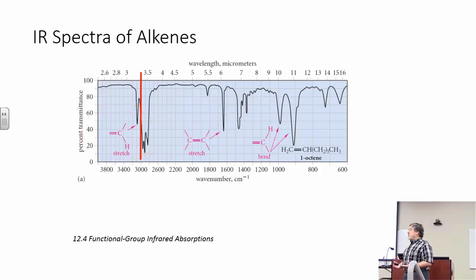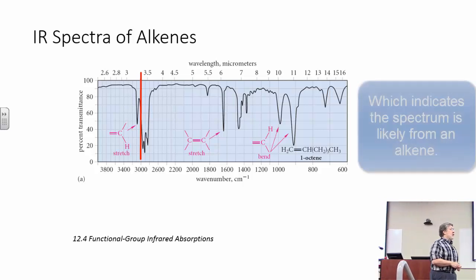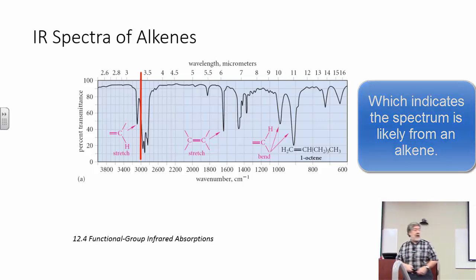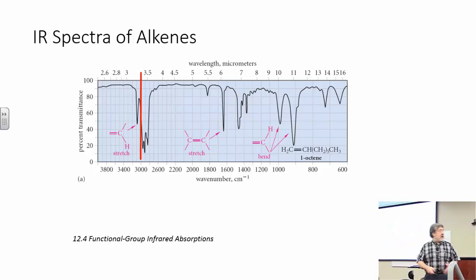And so when you see a spectrum for the first time, you look at the 3000 line, and you notice, yeah, there's stuff to the right, but notice in particular stuff just to the left of 3000. That indicates hydrogens attached to SP2 hybrid carbons. And again, this is first pass. Now there is other information here. This other information I'd say probably is your second pass information, because maybe noting this is all you need to solve the question at hand.